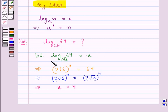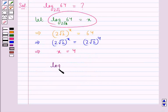And we have assumed x to be log of 64 to the base 2 root 2. Therefore we have log of 64 to the base 2 root 2 is equal to 4. This is our final answer.